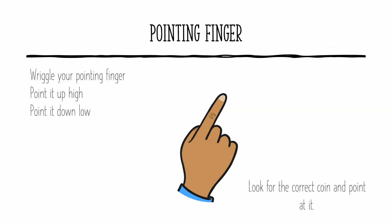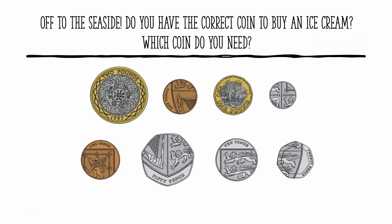Get your pointing finger ready. Off to the seaside — do you have the correct coin to buy an ice cream? What flavour ice cream would you buy? I think I would buy a mint flavour ice cream. Which coin do you need? The ice cream costs 20 pence. Oh, that's a very cheap ice cream. Look with your eyes, find it with your finger. Hopefully you're pointing at this coin — this is the 20 pence coin, because it has written on there 20 pence. Excellent, well done.